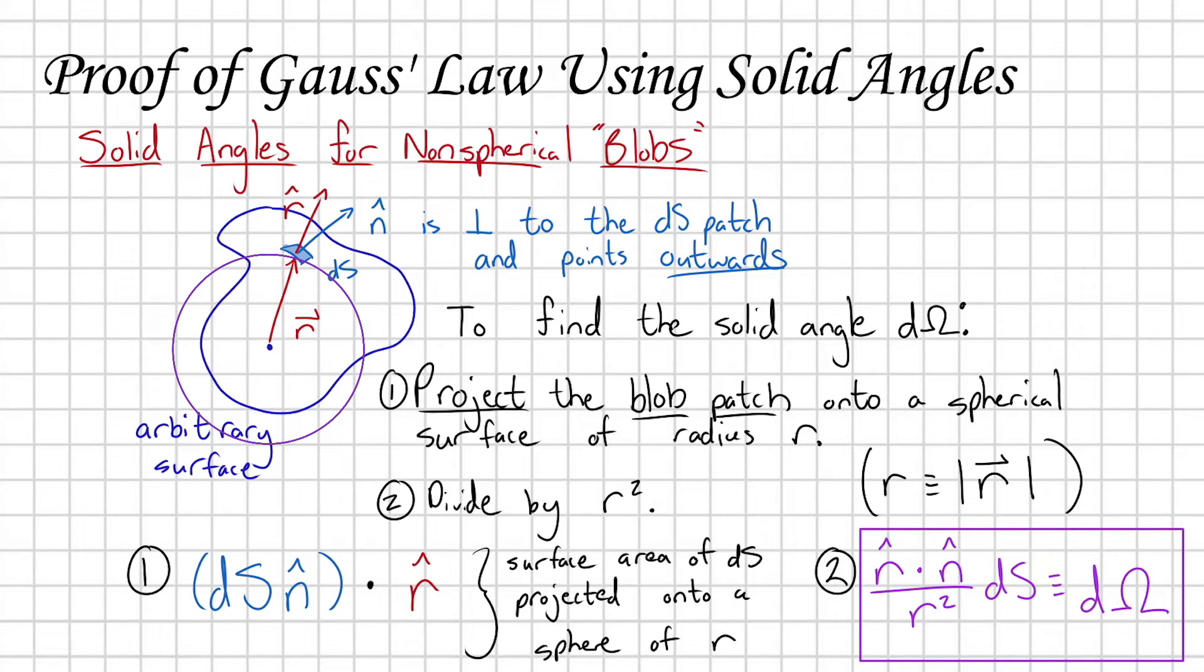I'm going to box this result. If we understand this procedure, the other thing that should be absolutely clear now is that the total solid angle subtended by any closed surface is always going to be equal to 4π.